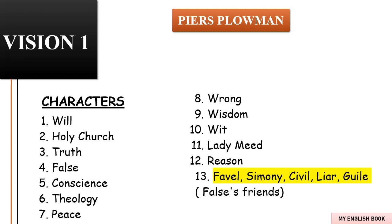The king tries to force Conscience to agree to marry Mead, but Conscience is adamant in his refusal, saying he won't even consider it unless Reason says it is right. The king tells Conscience to find Reason and bring him back to court. Reason arrives, but first the king must oversee a legal case between Peace and Wrong. Peace accuses Wrong of three serious crimes. Wrong has two lawyers named Wisdom and Wit who try to buy Wrong's way out of punishment, but guided by Conscience and Reason, the king knows financial payment is not enough. Mead then tries to bribe Peace into dropping the charges, which angers the king even more, and he calls for a harsh punishment for Wrong. This is the end of Vision One.